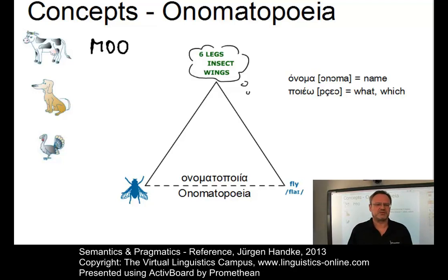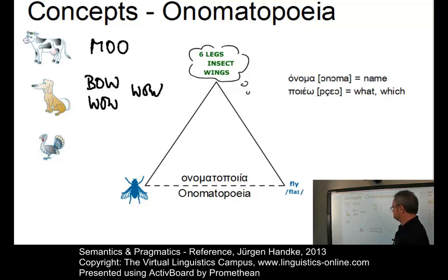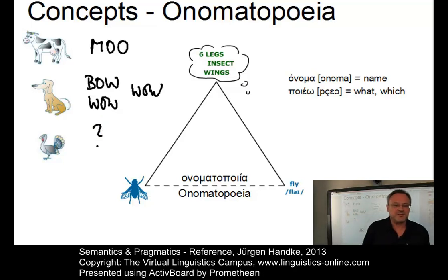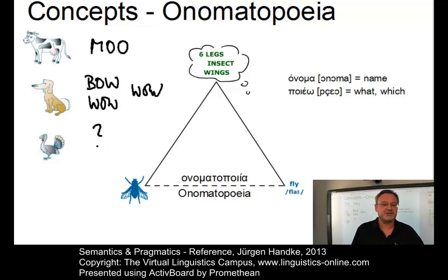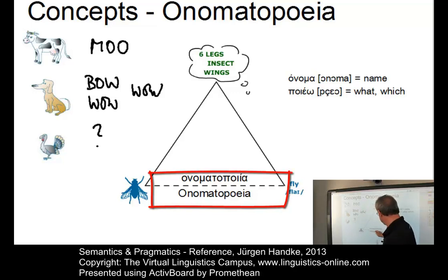However, onomatopoeia works less well for dogs, where English dogs go 'bow-wow' and German dogs go 'wau-wau.' It is even less consistent if we look at a rooster: in German it goes 'kikeriki,' in English 'cock-a-doodle-doo' — and what about your language? Onomatopoeia only affects a handful of items, which is why the bottom line of the semiotic triangle is dashed rather than a straight line.